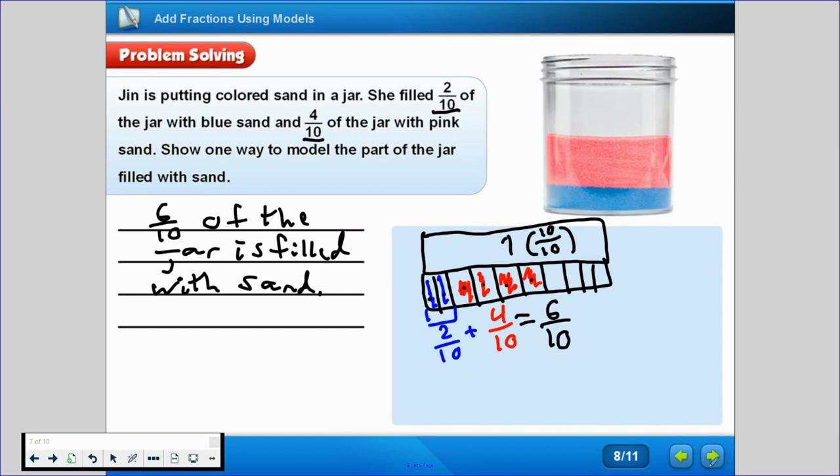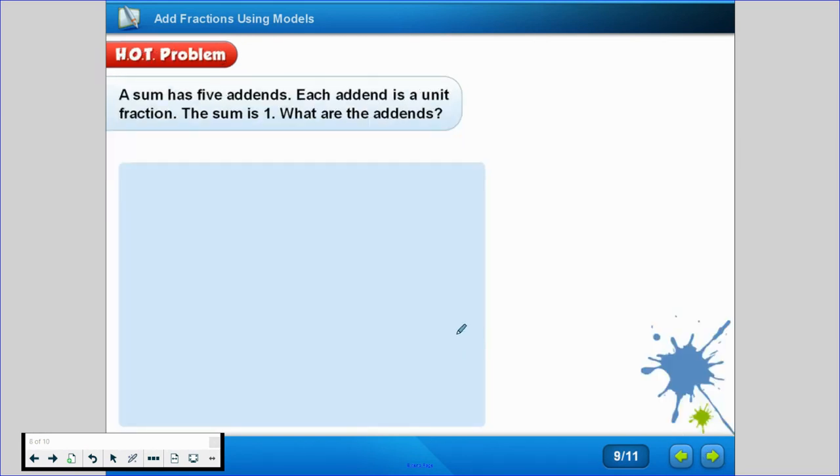Oh, this is the hot problem. I actually really like this one. The sum has 5 addends, that means it has 5 parts that add up to it. Each addend is a unit fraction, meaning it's a part of the whole and not the whole. The sum is 1. So what could the addends be?